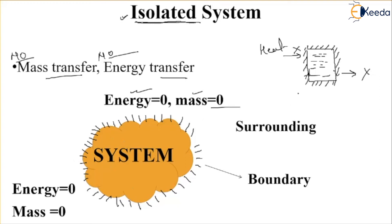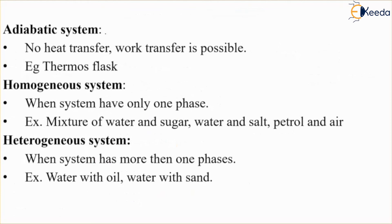So these three types of systems we have to learn in thermodynamics. Now let's see some more types of thermodynamic system. The next type is the adiabatic system. Adiabatic is generally defined with q equals to zero — meaning there is no heat transfer from system to surrounding or from surrounding to system. That particular system is called adiabatic system.